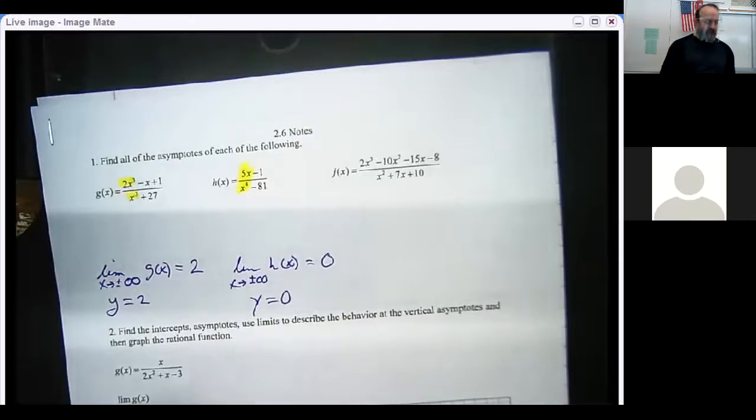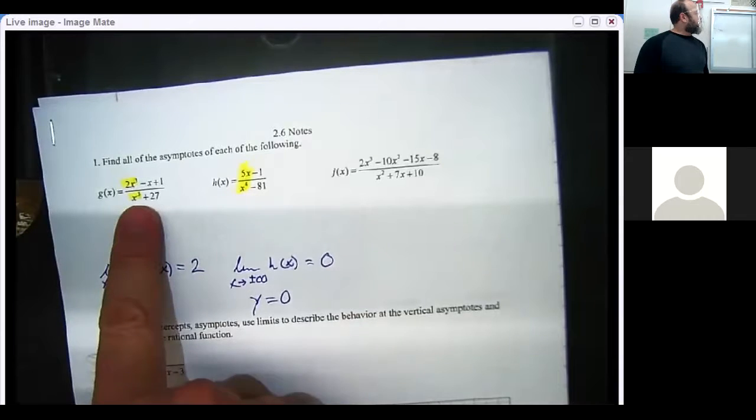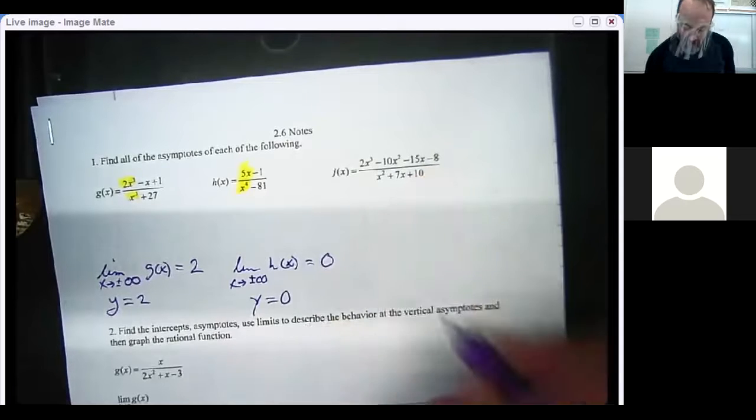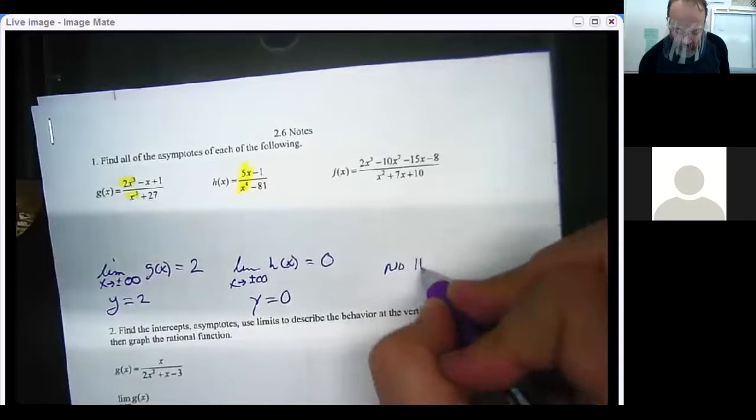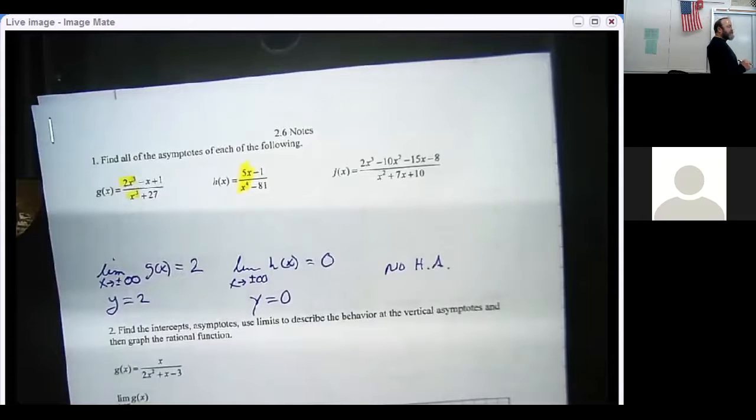So anytime the power of the bottom is bigger, it's going to have a horizontal asymptote at zero. Why was this a number? What made it a number? The powers were the same. Now, over here, the last one, is there is no horizontal asymptote. Why? The power of the top was actually bigger than the bottom. Are you guys all right with that?